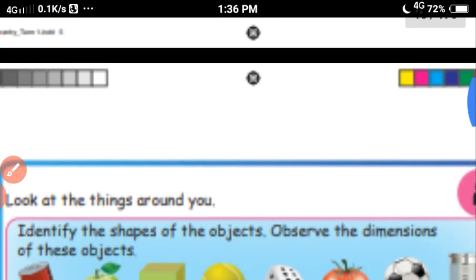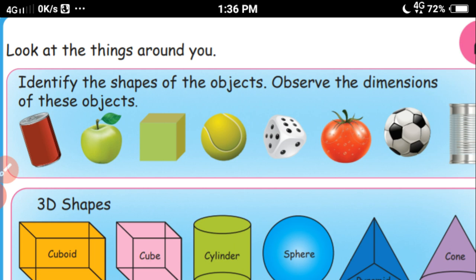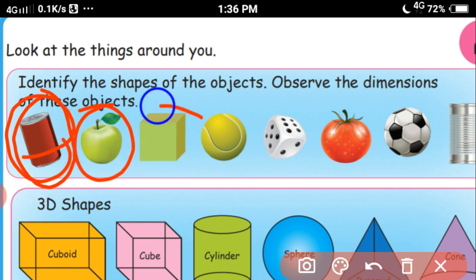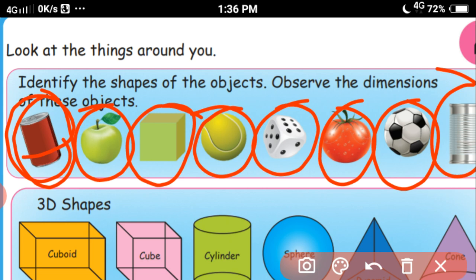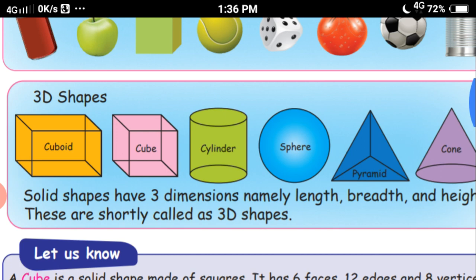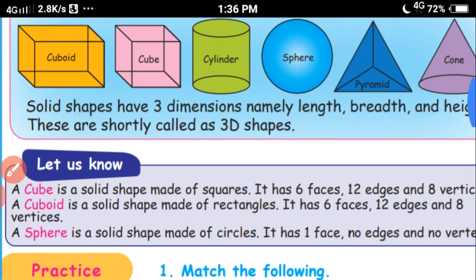Now look at the things around you. Identify the shapes of the objects and observe their dimensions. This is a 3D shape — it is a cylinder shape. This one — an apple — is a sphere shape. These are the 3D shapes: cuboid, cube, cylinder, sphere, pyramid and cone. These 3D shapes have some features and properties.